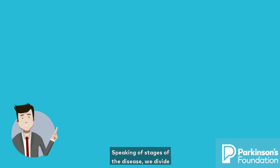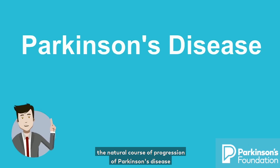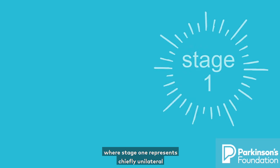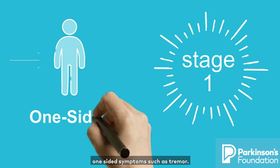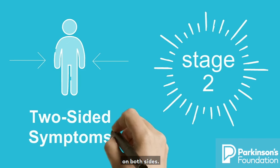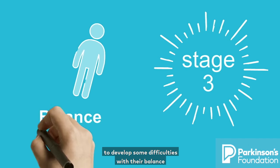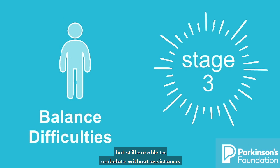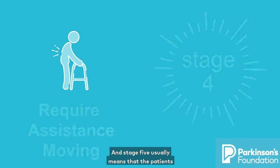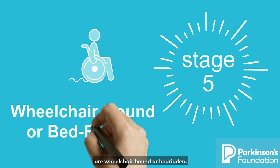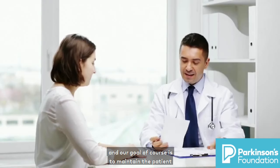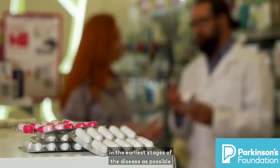Speaking of stages of the disease, we divide the natural course of progression into five stages — the so-called Hoehn and Yahr stages. Stage one represents chiefly unilateral, one-sided symptoms such as tremor. Stage two means symptoms occur bilaterally on both sides. Stage three means the patient is beginning to develop difficulties with balance but can still ambulate without assistance. Stage four means they require assistance with ambulation. Stage five usually means the patient is wheelchair-bound or bedridden. Our goal is to maintain the patient in the earliest stages possible with appropriate treatment.